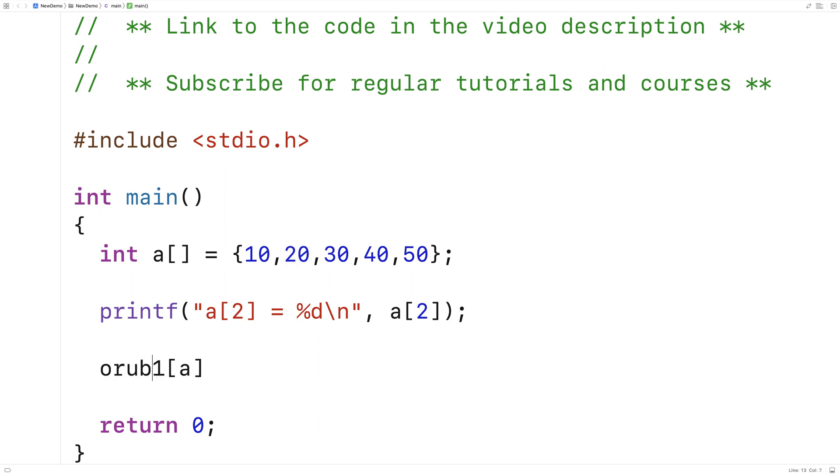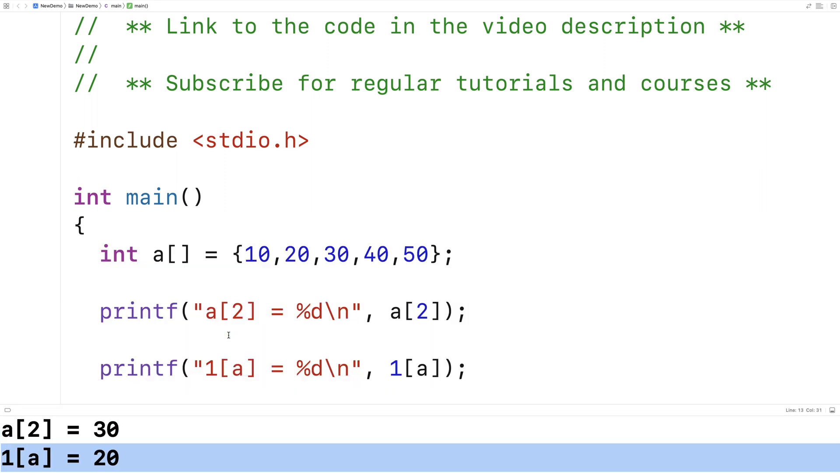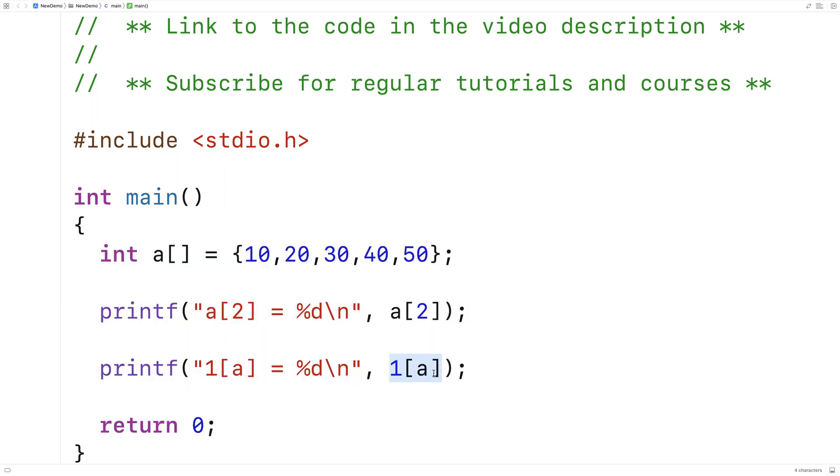So I could say printf and we'll output 1 a is equal to percent d slash n, and we'll output 1 a here. I could save this and run it and we're going to get 20 here, and this works. So somehow this is working, somehow this is allowing us to access index 1 of this array here a.